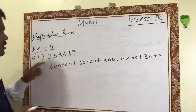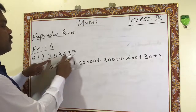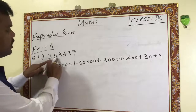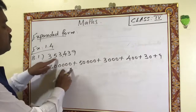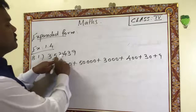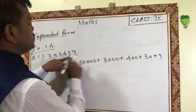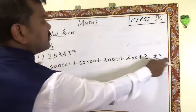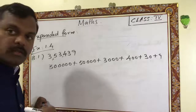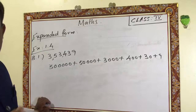Here is an easy trick: for the first digit, count how many remaining digits there are — one, two, three, four, five — and add five zeros. Next digit: remaining four, add four zeros. Next: three remaining, add three zeros. Next: two remaining, add two zeros. Next: one remaining, add one zero. Then the last digit stands alone. This is a very easy method.